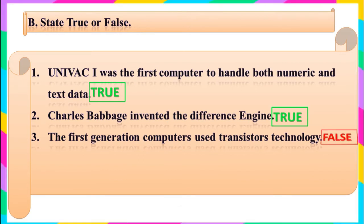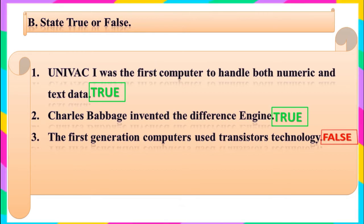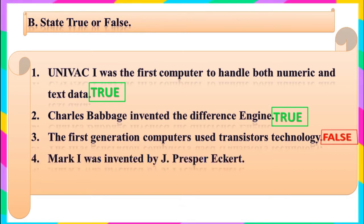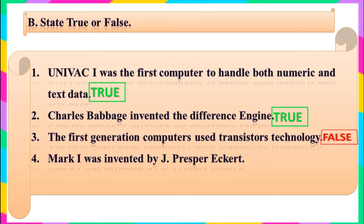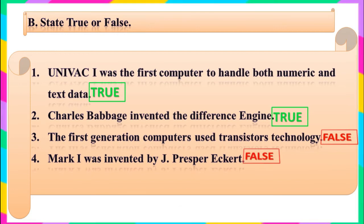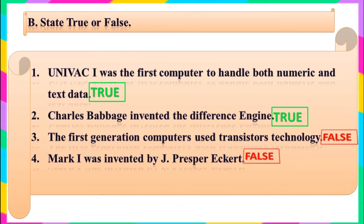The first generation computers used vacuum tubes. Question 4: Mark 1 was invented by J. Presper Eckert. Children, got the answer? Yes, it is false. Mark 1 was invented by Howard Aiken, not J. Presper Eckert.